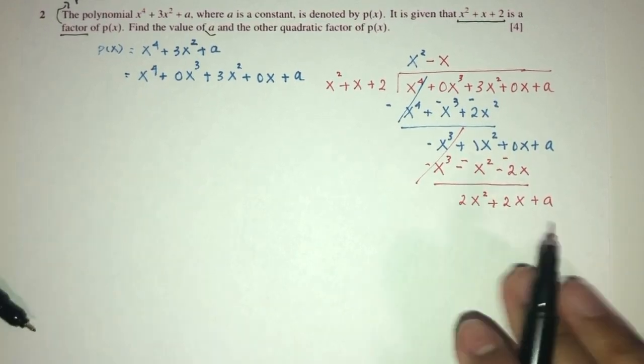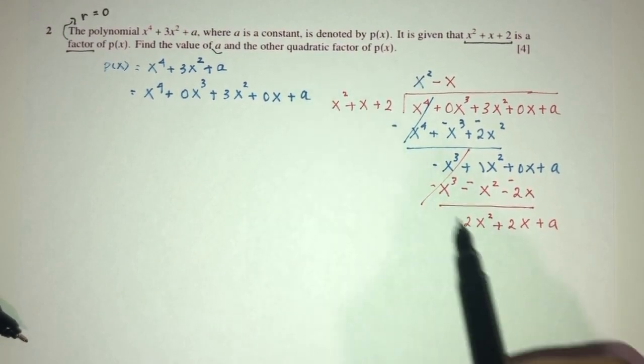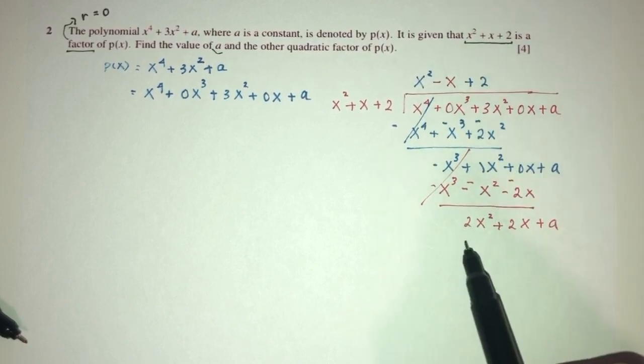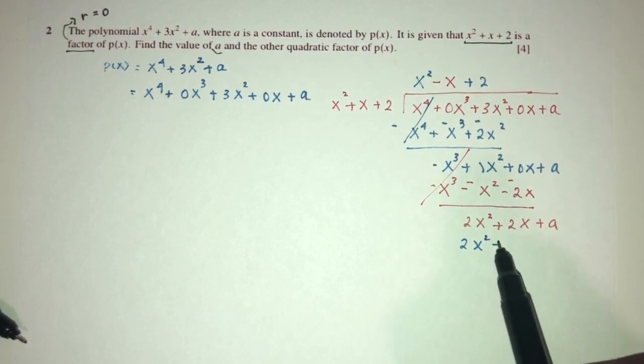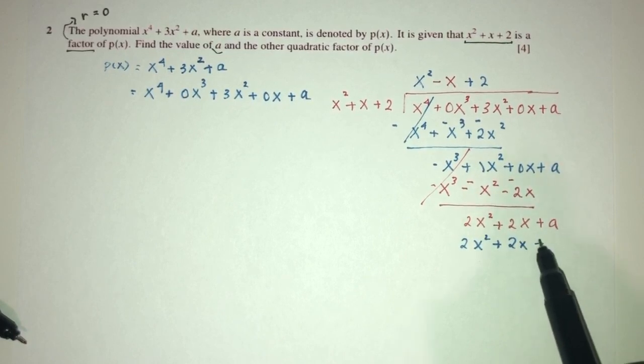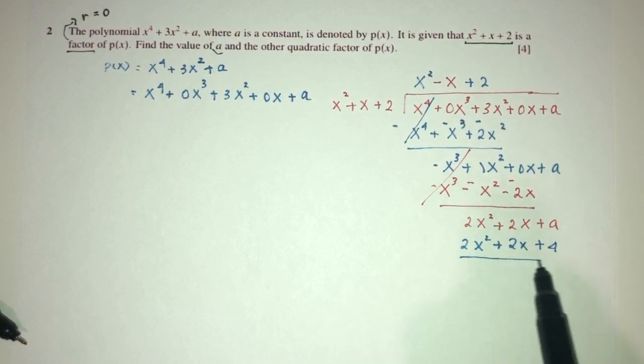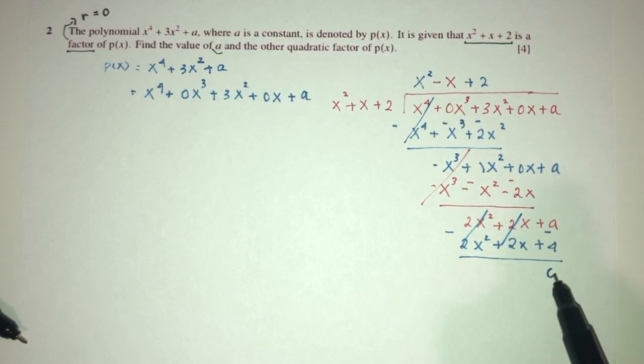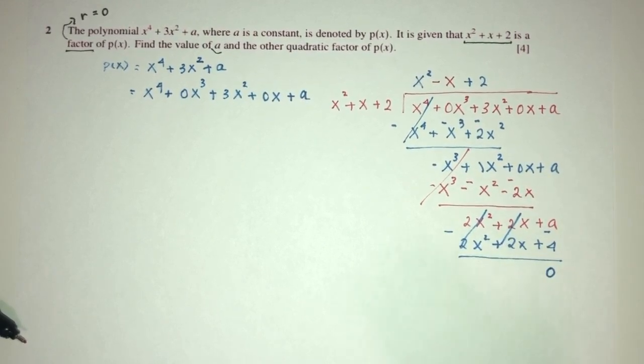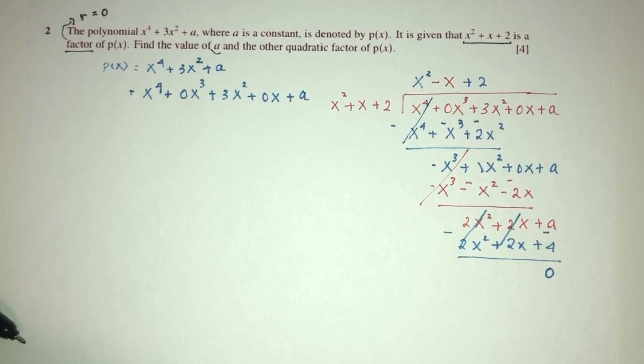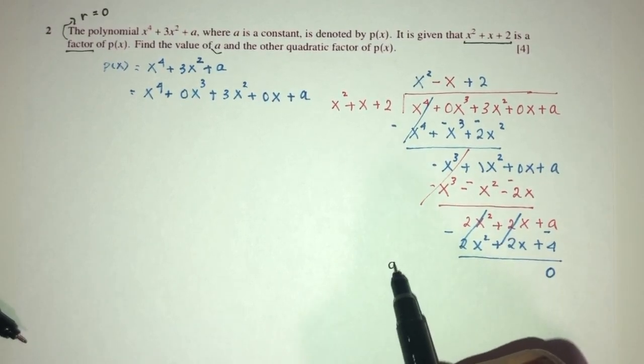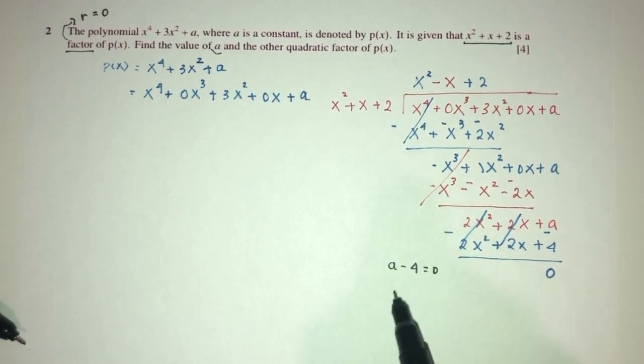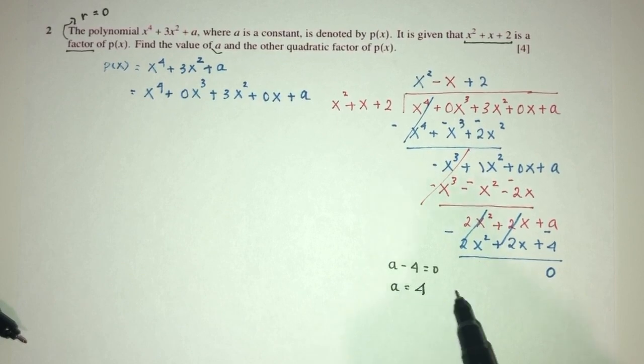Finally, how do you make x square become 2x square? Multiply by plus 2. That will be 2x square plus 2x plus 4. Minus. This will cancel out, cancel out. This should give you 0 because we know it is a factor and the remainder will be 0. Hence, we use this information. You say a minus 4 has to be 0. Thus, a will have to be the value of 4.